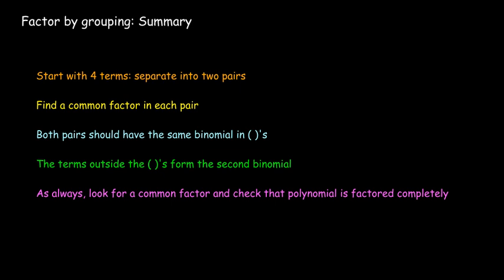So, in summary, when we have factoring by grouping, we have to get to 4 terms. If we have 4 terms, we separate them into 2 pairs. In each pair, we look for a common factor.